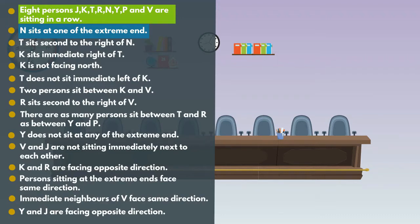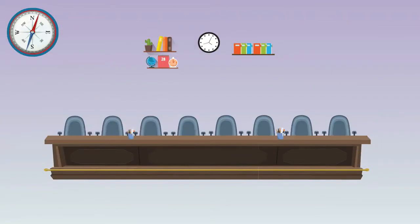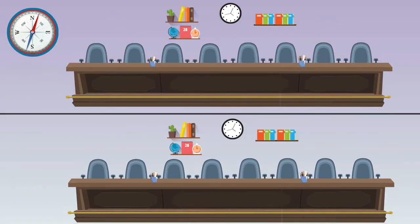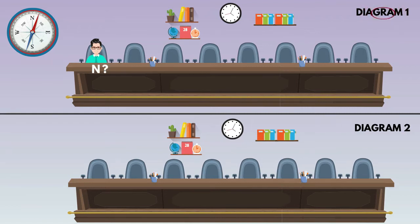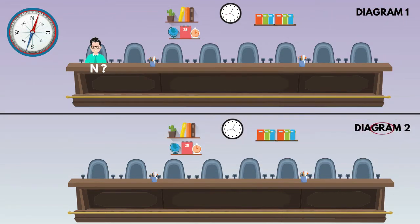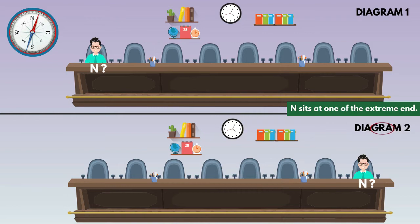Later, we will discuss. In the diagram, the extreme ends are position 1 and position 8. We can place N here or here because N sits at one of the extreme end. So we will get two possible diagrams: diagram 1 and diagram 2. In diagram 1, place N at the left extreme end. In diagram 2, place N at the right extreme end. We don't know the direction of N in either case.